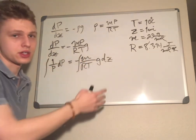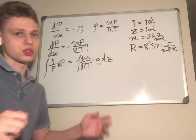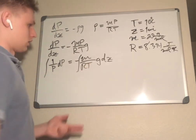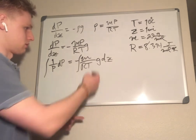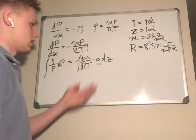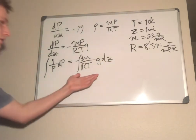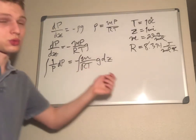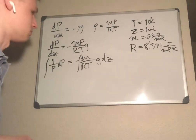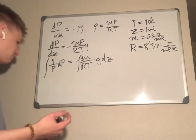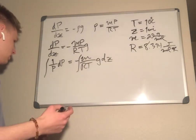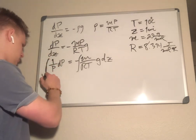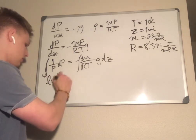I'm going to divide to get dp over p equals negative m over rt g dz. I'm going to leave all of this inside here because it's a good rule of thumb that you don't know which variables are gradients with regard to z. We don't want to assume anything.